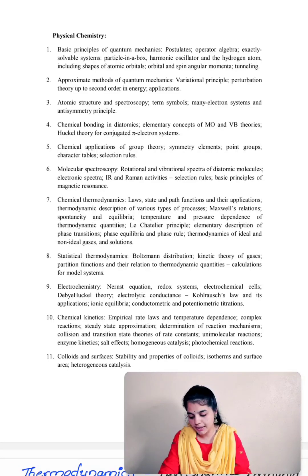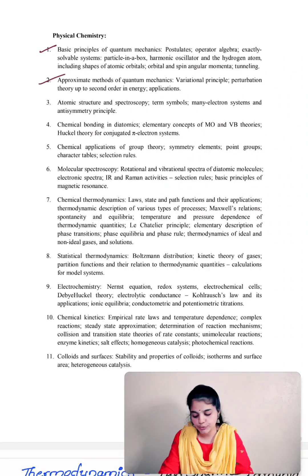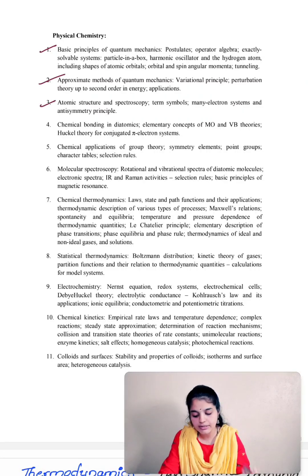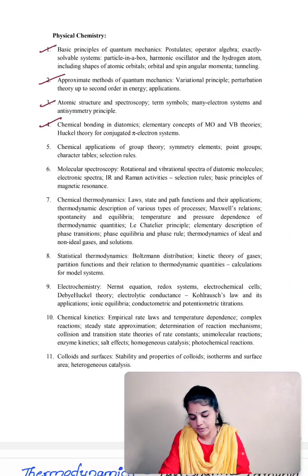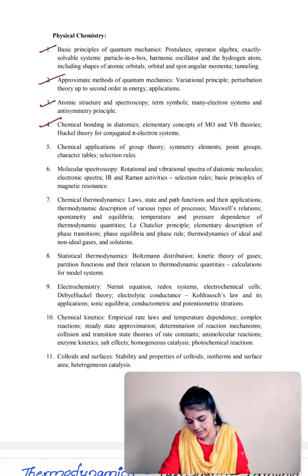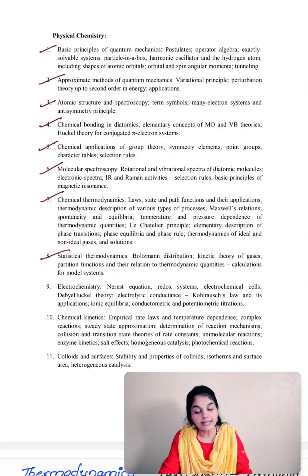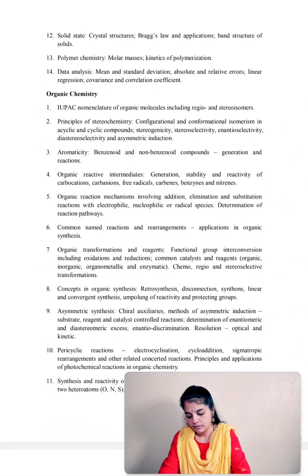Looking at the physical chemistry syllabus, we have basic principles of quantum mechanics, approximate methods of quantum mechanics, atomic structure and spectroscopy, term symbols, many-electron systems and asymmetric principle, chemical bonding in diatomics, molecular orbital theory, valence bond theories, Hückel molecular orbital theory for pi-conjugated systems, group theory, molecular spectroscopy, chemical thermodynamics, statistical thermodynamics, electrochemistry, chemical kinetics, colloids and surfaces, solid state, polymer chemistry, and data analysis.